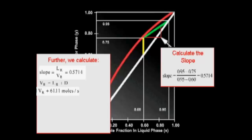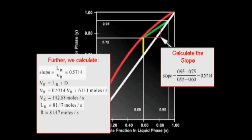The slope of this line is equal to 0.5714. The slope of the upper operating line is equal to the ratio of the liquid flow to the vapor flow. By performing a mass balance on the condenser, the vapor leaving the top tray and entering the condenser either exits from the column as the distillate or is returned to the column as liquid reflux R. By solving the mass balance, we obtain the value of the reflux rate. It is equal to 81.47. The minimum reflux ratio, R over D, is equal to 1.33.